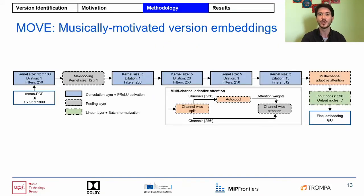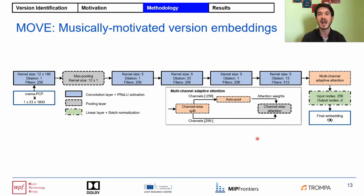This concludes the network architecture part of MOVE. We started with the chroma pitch class profile features, then the transposition invariance module, then the convolutional layers to expand receptive fields, the multi-channel adaptive attention mechanism, and finally the linear layer and batch normalization to obtain our final embeddings.